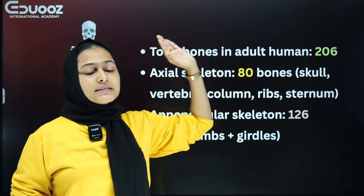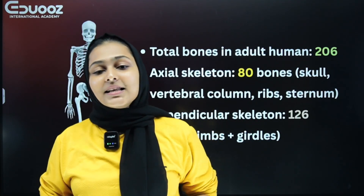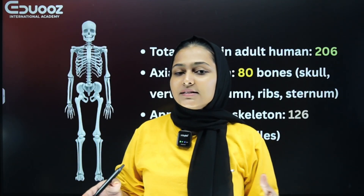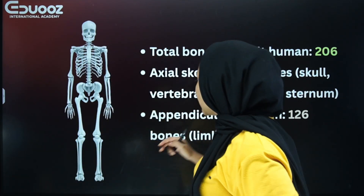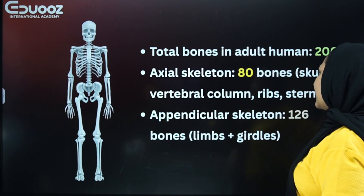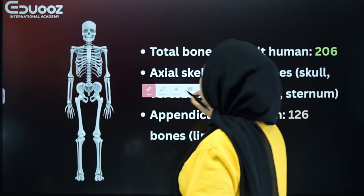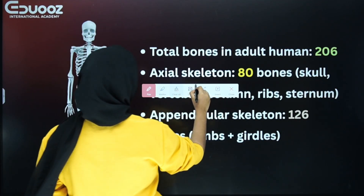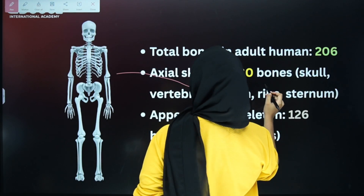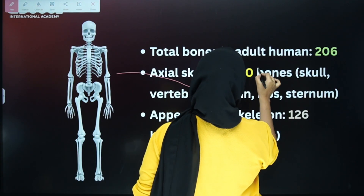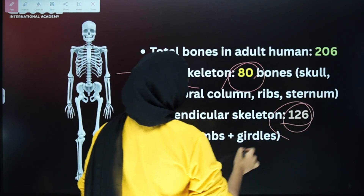In our body, the skeletal system has two categories. The axial skeletal system has 80 bones, and the appendicular skeletal system has 126 bones. So axial skeletal: 80 bones, appendicular skeletal: 126 bones.